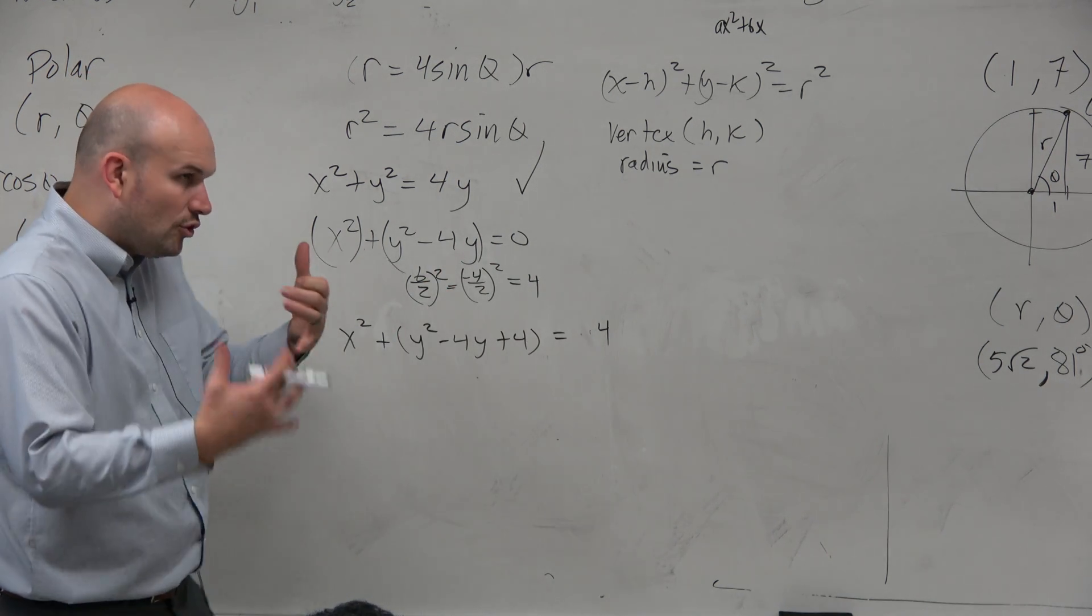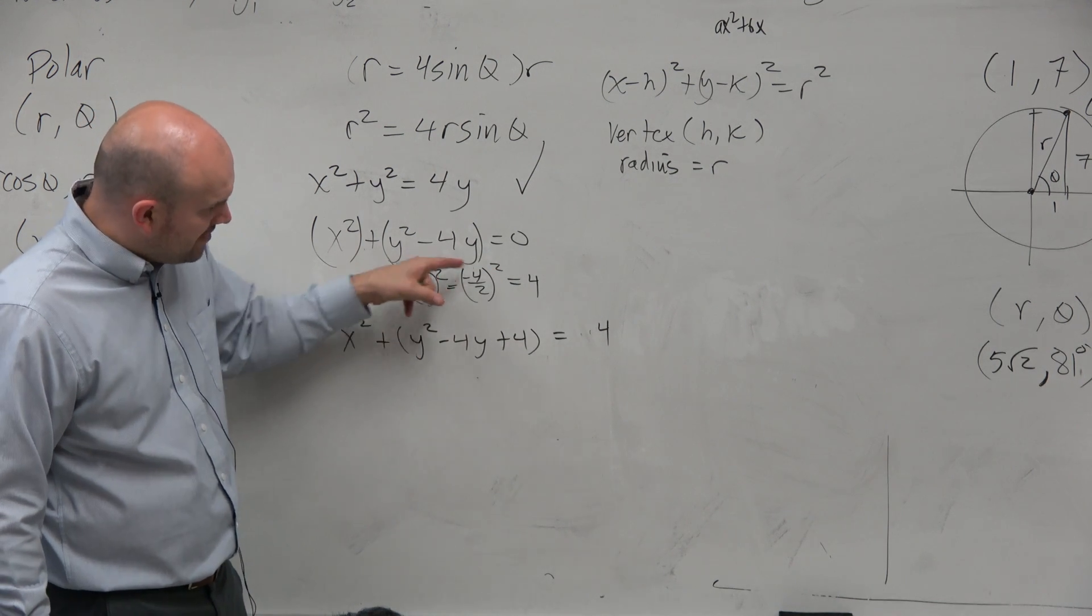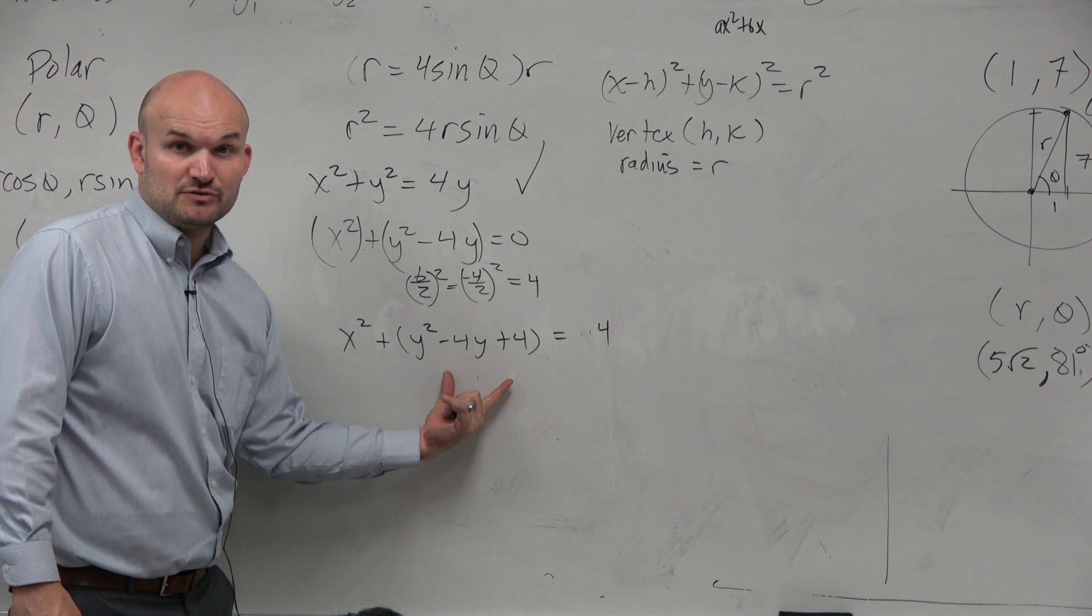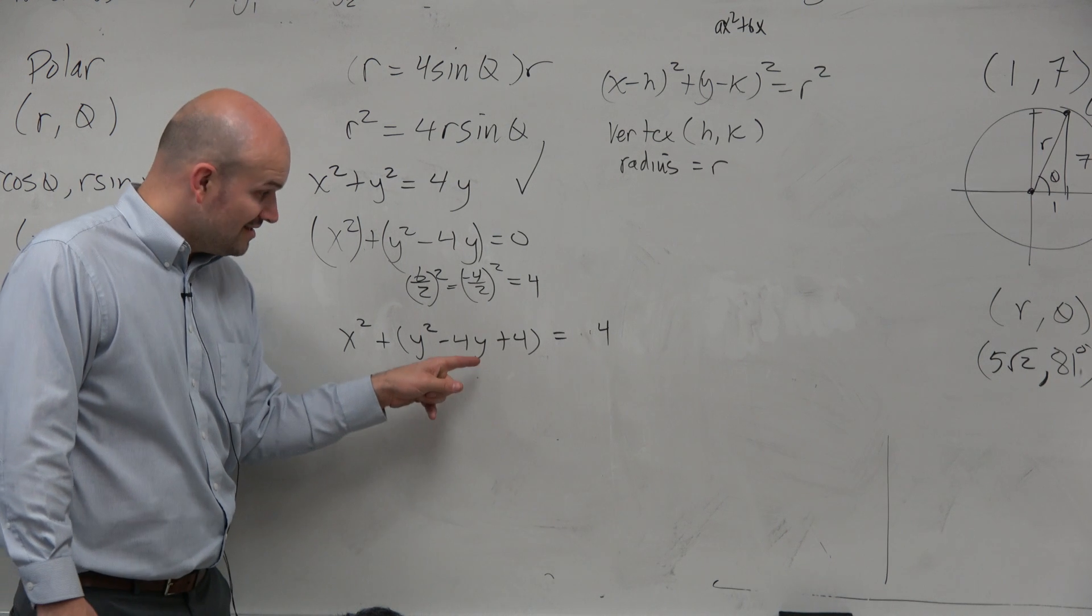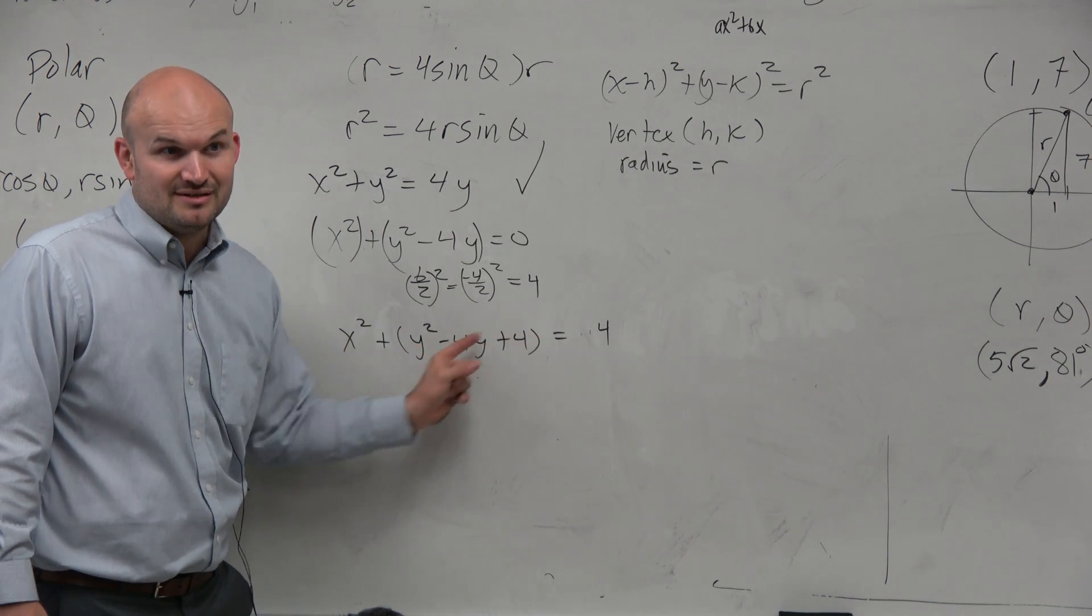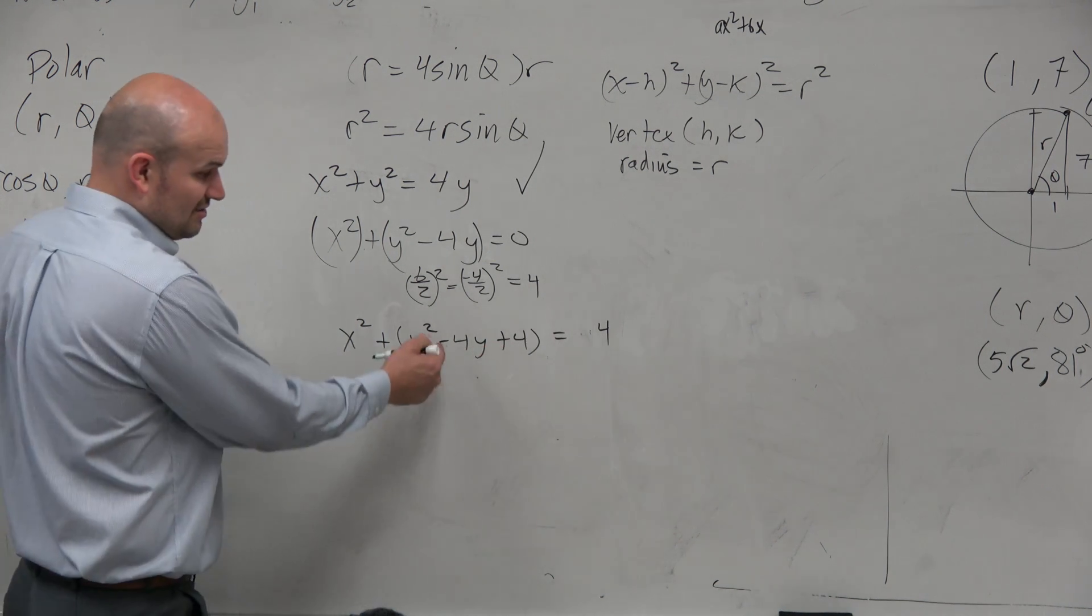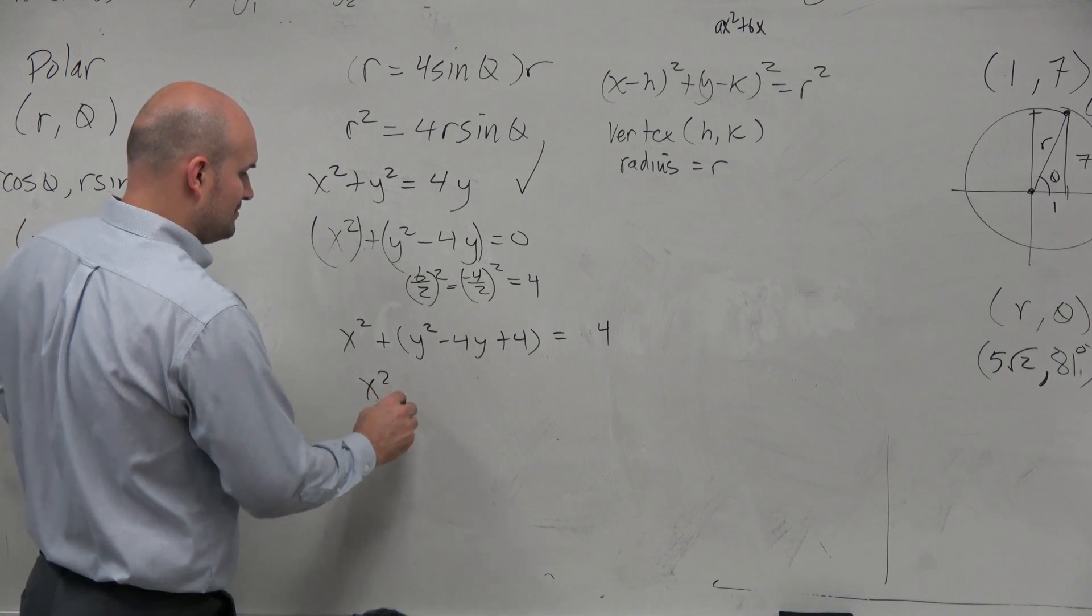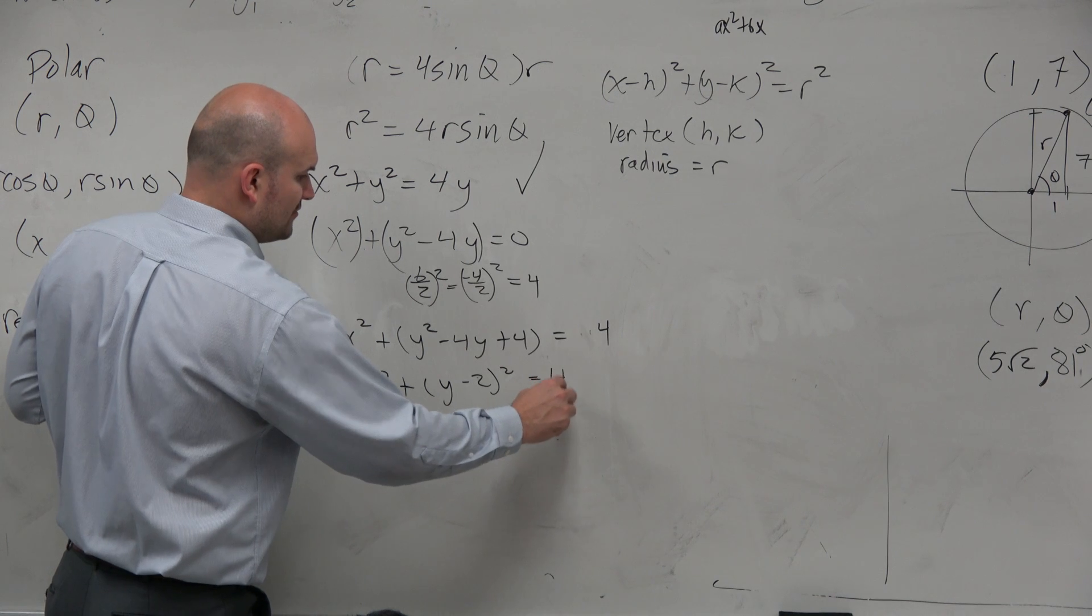And again guys, the whole purpose of this, what I just did, is by adding my b divided by 2 squared, I created a perfect square trinomial. And what's nice about perfect square trinomial is remember that worksheet I gave you guys when I was gone? Right? All of those factoring practice, this was on there. This was one of those factoring ones. Does anybody remember what this is factored? You always take the middle term, y minus 2 squared. So we have x squared plus y minus 2 squared equals 4.